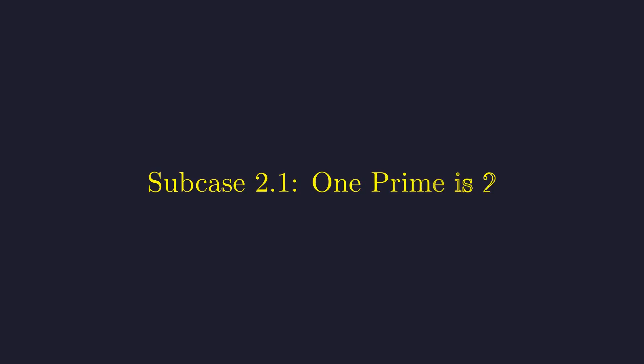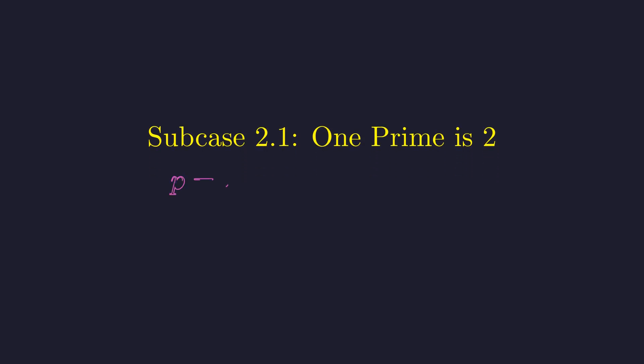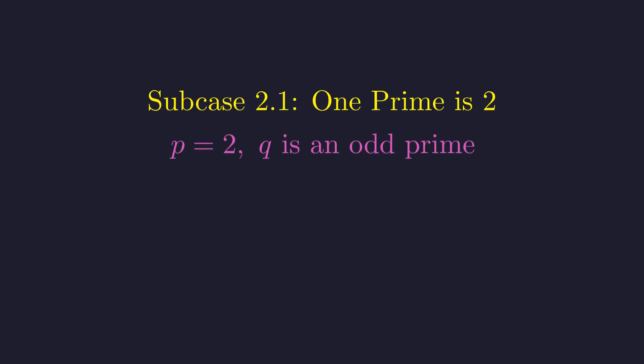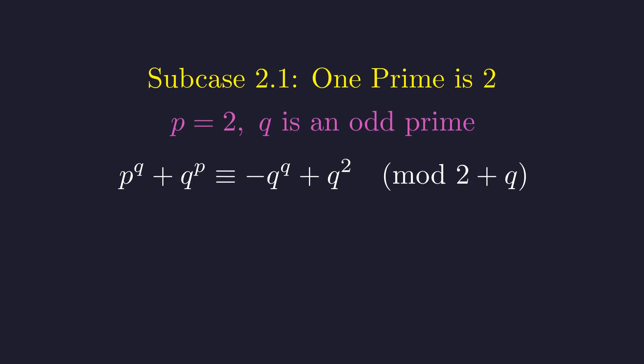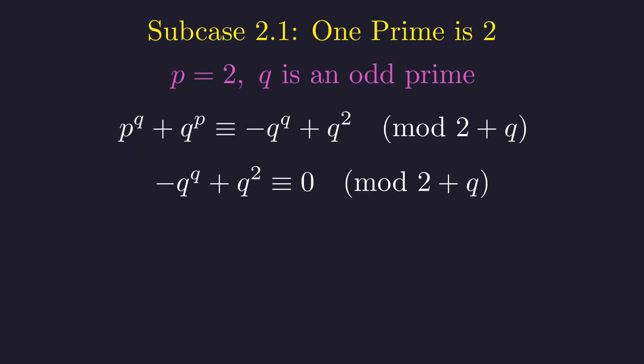Let's handle the case where one of the primes is the only even prime, the number 2. Let's set p equal to 2, without loss of generality. Since p and q must be different, q must be an odd prime. Our congruence becomes negative q to the q, plus q squared, modulo 2 plus q. For this to be divisible by 2 plus q, it must be congruent to 0. So this is our condition.